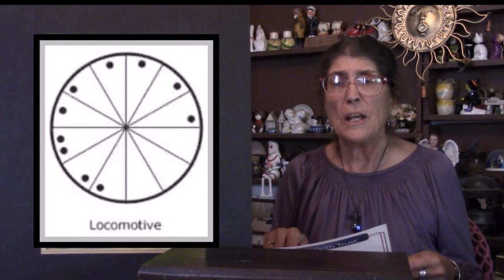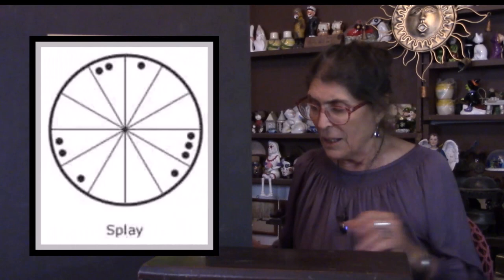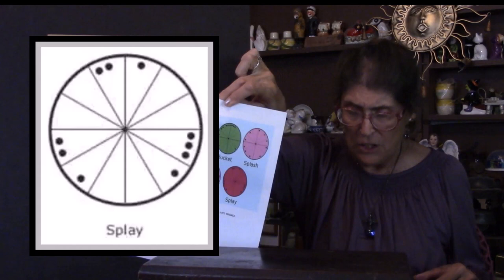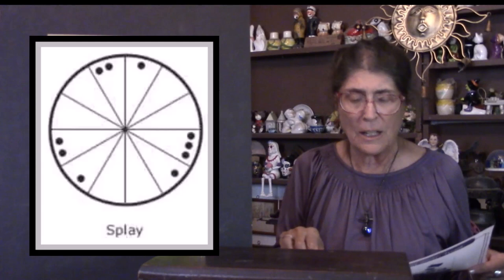The locomotive has all the planets in two-thirds of the chart, and the one planet at the leading side of the chart that moves forward is called the engine or locomotive. It's a very high-intensity, high-energy chart showing strong direction and a sense of purpose. Last of all, the splay chart has at least two conjunctions but everything else is scattered around. Conjunctions are planets that are clustered together. That's a quick view of the seven patterns.